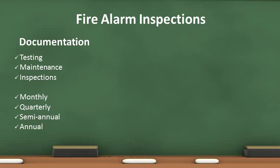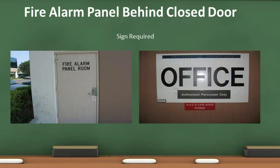The owner is responsible for providing documentation to the inspector for monthly, quarterly, semi-annually, and annually required maintenance inspections. Wherever fire alarm panels are located inside a room, a sign is required. The sign may read: Fire Alarm Control Panel, Fire Alarm, Fire Command Center, or Fire Control Room.